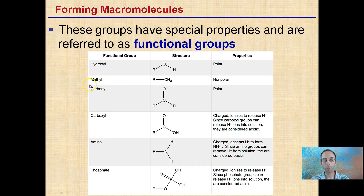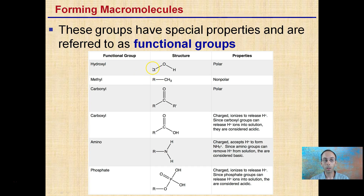Some of the main functional groups include the hydroxyl group, the methyl group, the carboxyl group, the amino group, and the phosphate group. These different types of groups have very distinctive structures, and it's important that these structures are defined because they determine the various properties. For example, the hydroxyl group has an OH attached to R as a variable group, and the methyl group has a variable chain attached to a CH3.